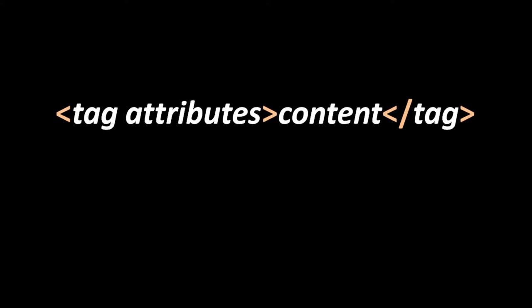For example, one called div, D-I-V. In a div tag, you'd place "div" both in the opening tag and the closing tag. In the closing tag, you'll notice after the first angle bracket there is a slash — that is what distinguishes the closing tag from the opening tag. In the opening tag, after the name of the tag itself, you may optionally have one or more attributes.